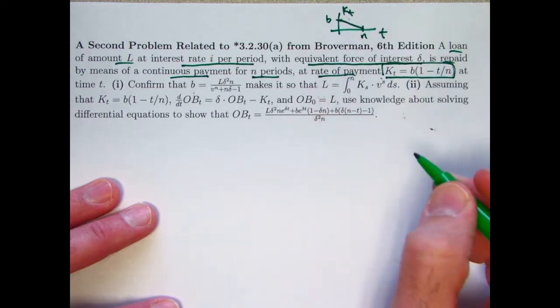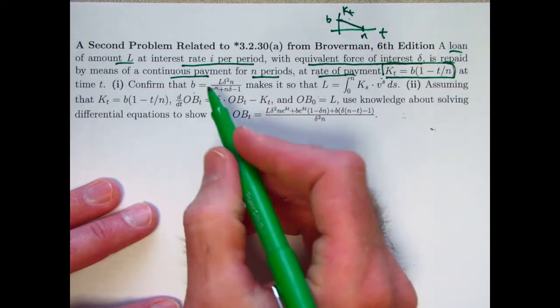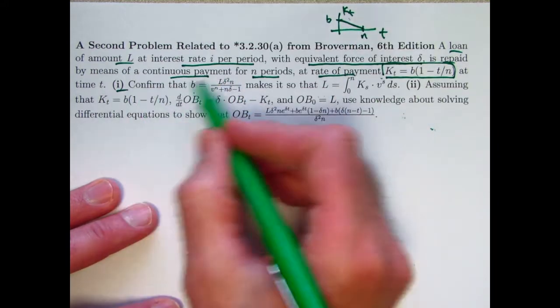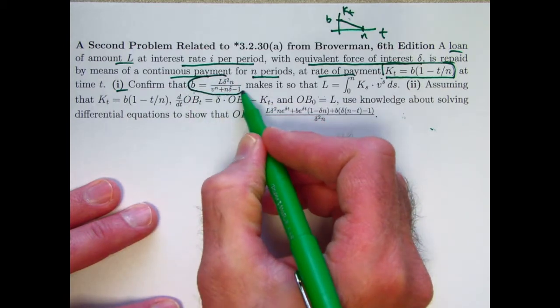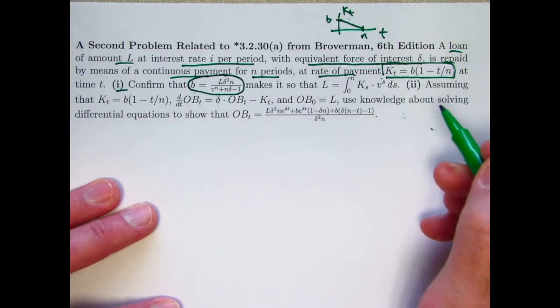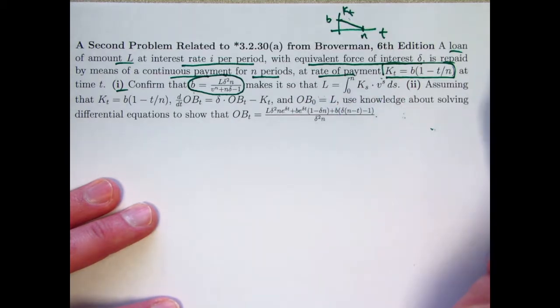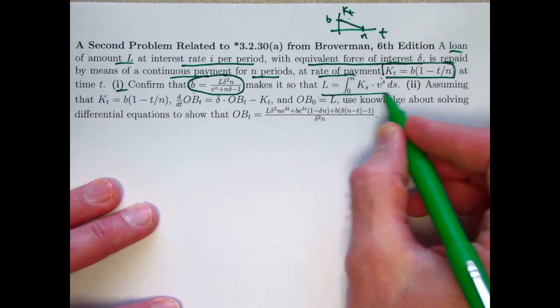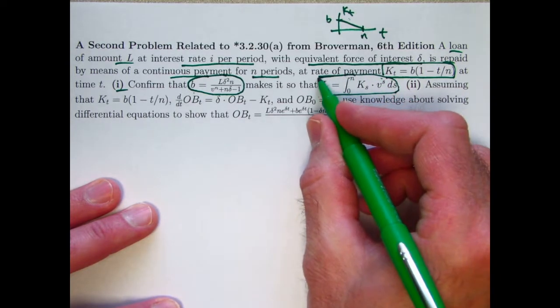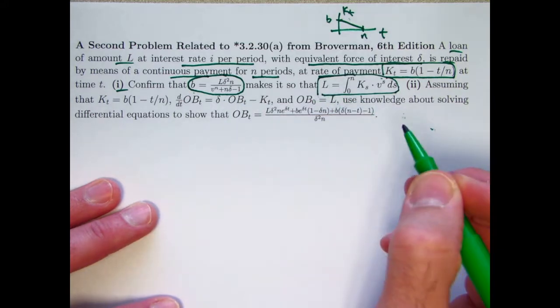The vertical intercept is at b. B is unknown until, well I tell you what it is here, in part one, confirm that b equals this thing right here. Why is that the value of b? Not just any b works. We want the loan to be completely paid off at time n. We want this integral to be true. So what we're going to do in part one is set the integral equal to L and solve for b.